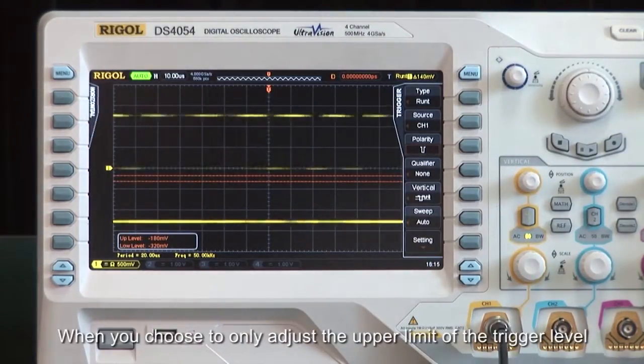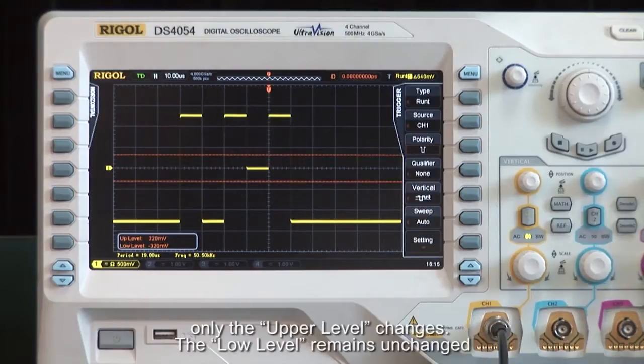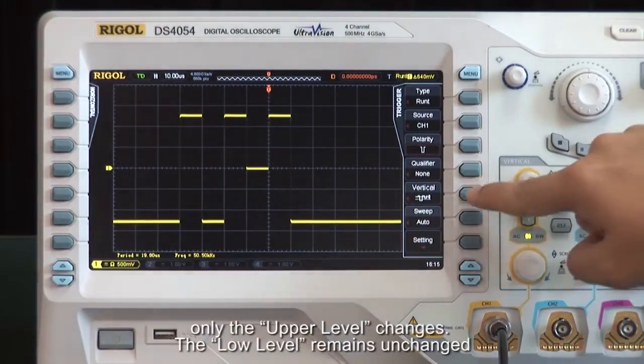When you choose to only adjust the upper limit of the trigger level, only the upper level will change. The lower will remain unchanged.